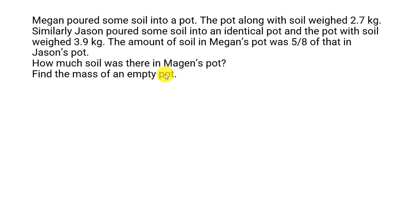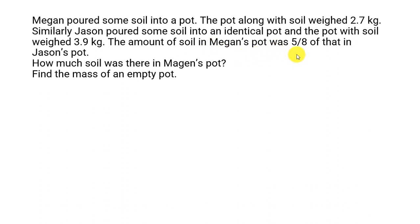Let's look for any statement that talks about a relationship. That statement would be: the amount of soil in Megan's pot was five-eighths of that in Jason's pot. This clearly shows that five units is Megan's portion, because Megan's pot has five units out of eight units of that of Jason's pot. So five units for Megan's pot and eight units for Jason's pot.